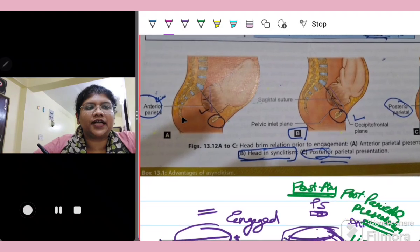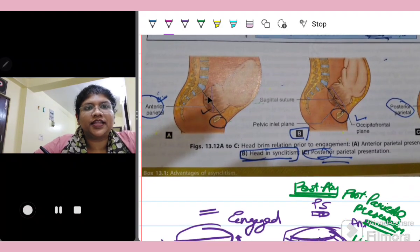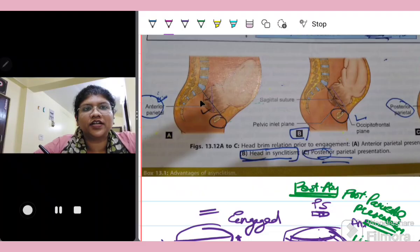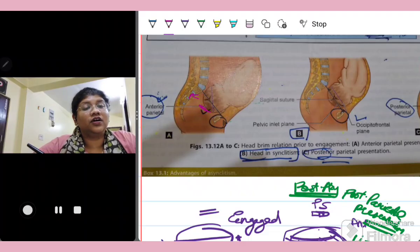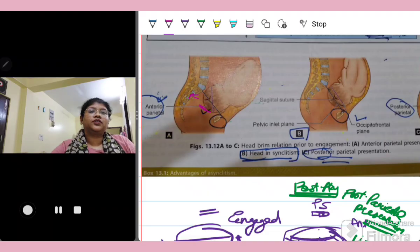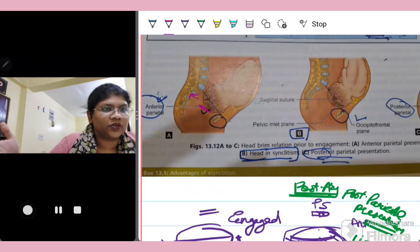Figure A shows anterior parietal presentation. That means in anterior parietal presentation, the sagittal suture is deflecting posteriorly. So you can see the baby's sagittal suture is deflecting towards the sacrum. So this is the anterior parietal presentation or the Naegele's obliquity.